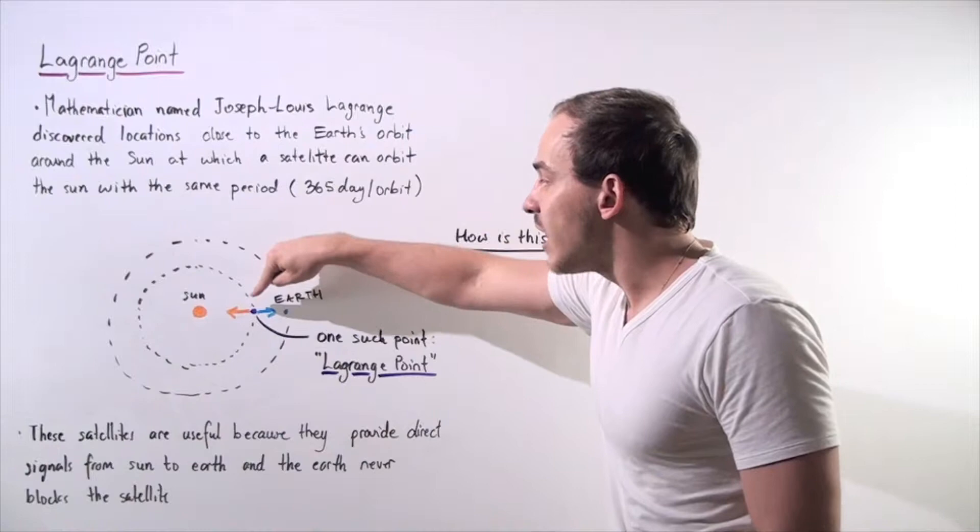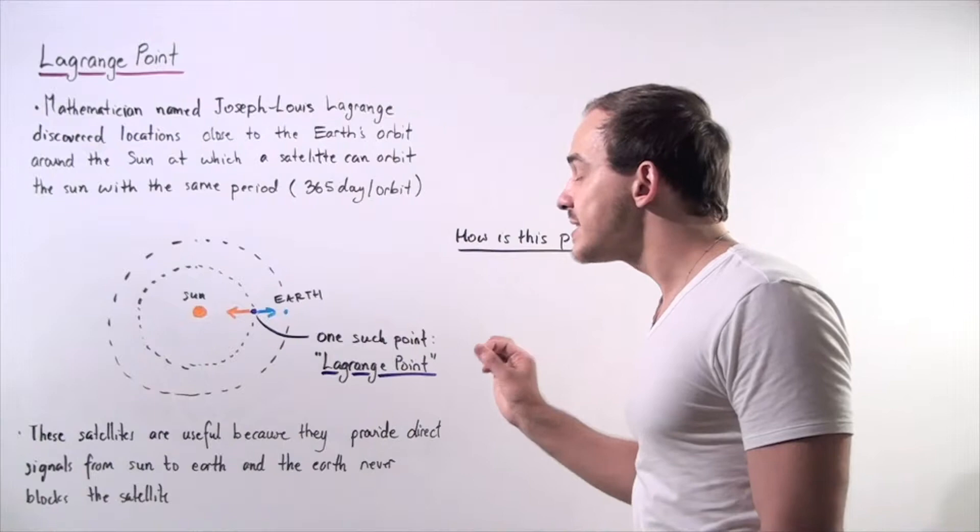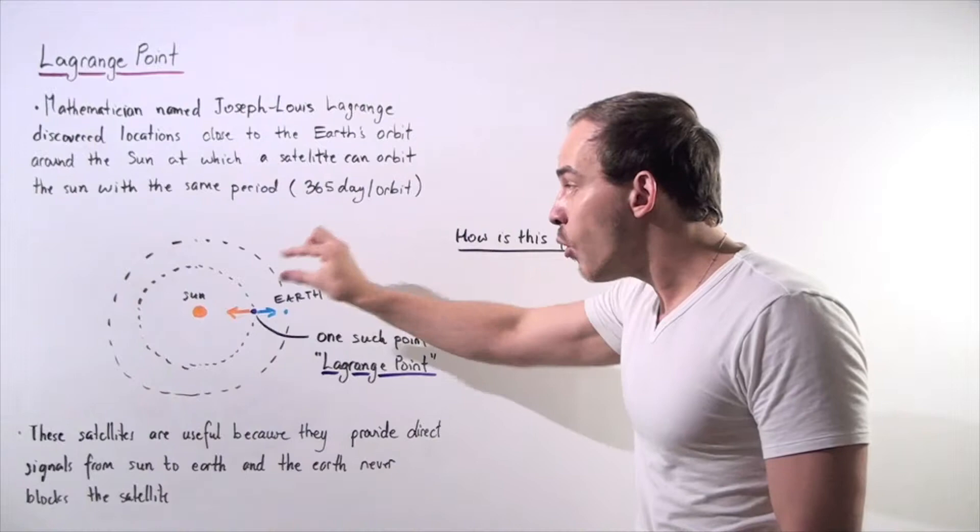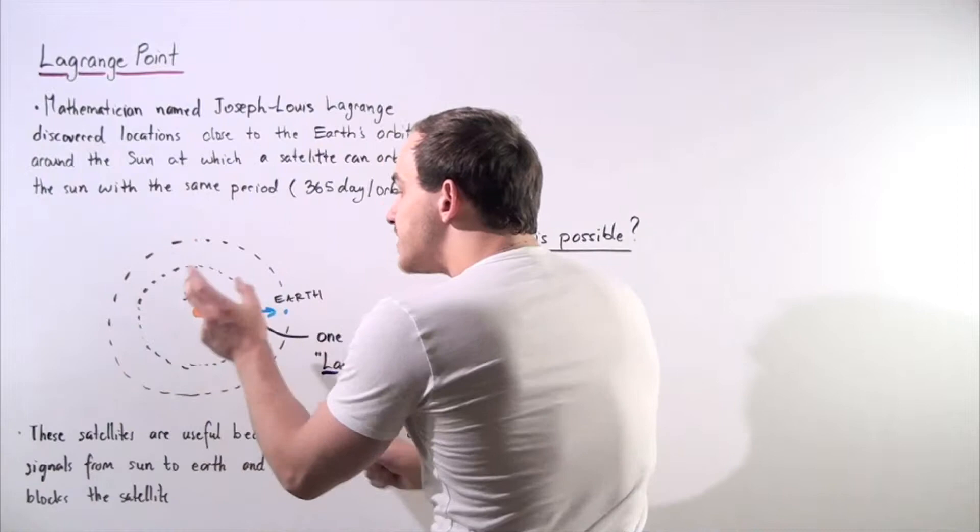So what this basically means is if we place the satellite at this specific Lagrange point, the period of the orbits of the satellite and the Earth will be exactly identical.